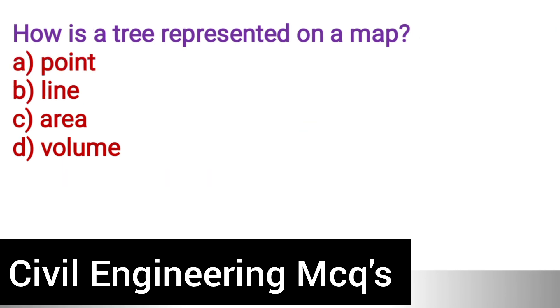Next question: How is a tree represented on the map? Option A: Point. Option B: Line. Option C: Area. Option D: Volume. The correct answer is option A, point.